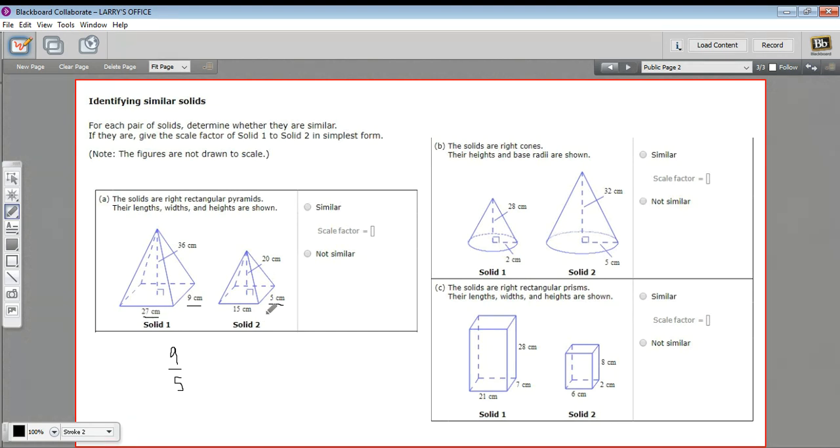So let's test the 27 to 15. So the question is, does nine fifths equal 27 fifteenths? Well, 27 divided by three is nine, 15 divided by three is five. So yeah, that does simplify. So these two equal.